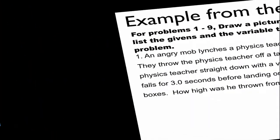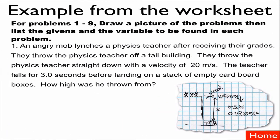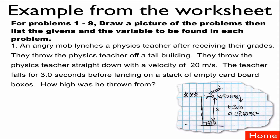Problem number one. An angry mob lynches a physics teacher after receiving their grades. They throw the physics teacher off a tall building, straight down with a velocity of 20 meters per second. The teacher falls for three seconds before landing on a stack of empty cardboard boxes. How high was he thrown from?